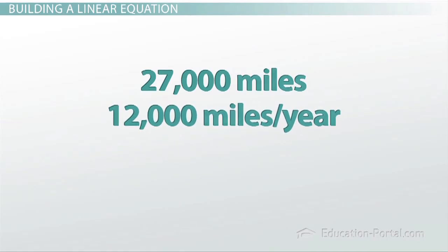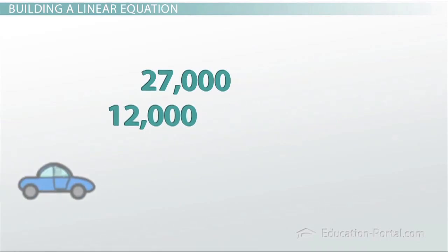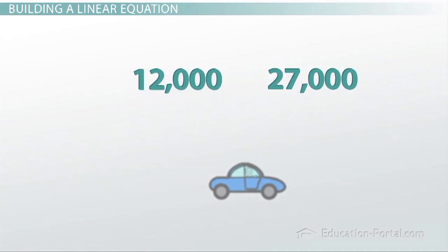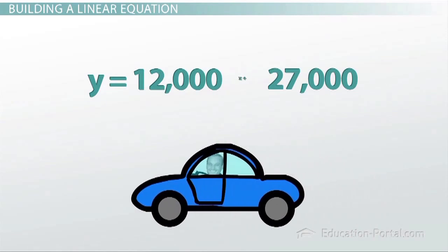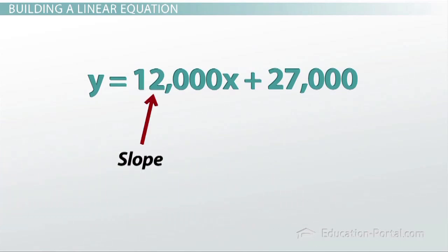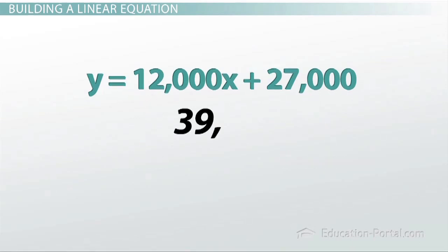And so what we end up with is a linear equation to represent the situation that looks like y equals 12,000x plus 27,000, because I drive it 12,000 more miles every year. So that's how much the pattern moves by, and the pattern began at 27,000 miles when I first bought the car.